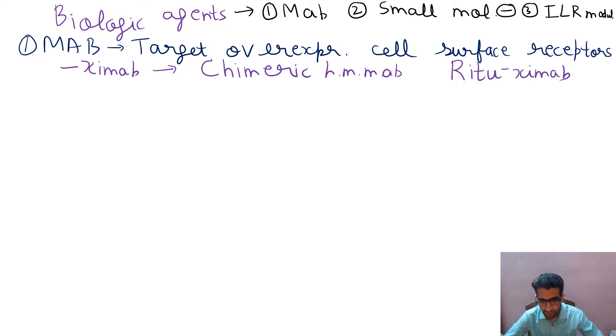Now moving on to another one, that is zumab. One very important homework for you all, what is the difference between humanized and human monoclonal antibody? Zumab is, I'm sure you all who are preparing for these cognitive exams know the answer. Please let me know in the comment section. So humanized monoclonal antibody is bevacizumab.